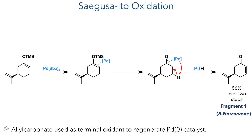This then took part in a Saegusa-Ito oxidation. It was reacted with a palladium-DBA complex, which first coordinates to the pi-bond and then forms an enolate complex upon elimination of the TMS group. A beta-hydride elimination then occurs, forming R-norcarvone with a 56% yield over two steps. Allyl carbonate was also present in the reaction and is used as a terminal oxidant to regenerate the palladium(0) catalyst from the palladium-hydride species.